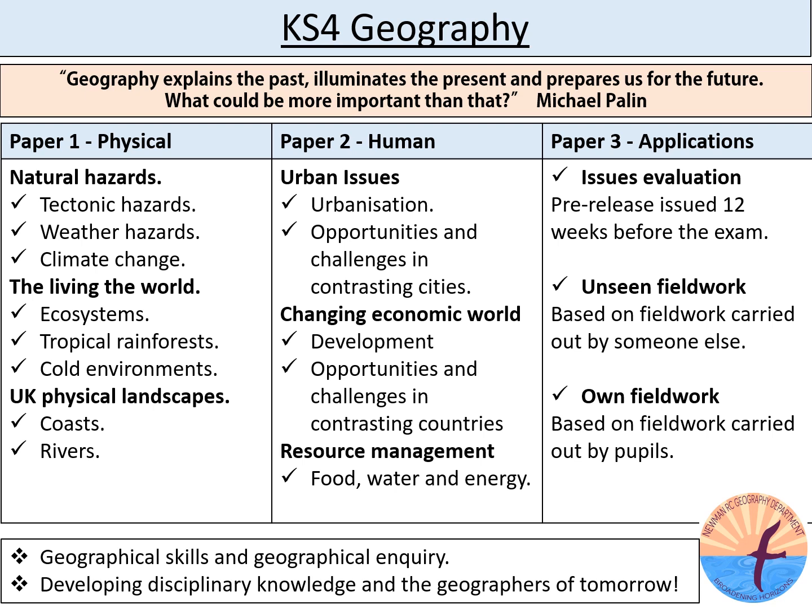Paper 1 is divided into three sections. Section A focuses on natural hazards. Our students will learn about tectonic hazards such as earthquakes and volcanoes. They will then learn about weather hazards including extreme weather events in the UK as well as tropical storms. They will also look in greater depth at climate change — exploring the evidence for it, the natural causes as well as the human causes, and how we can adapt to and mitigate against it in the future.